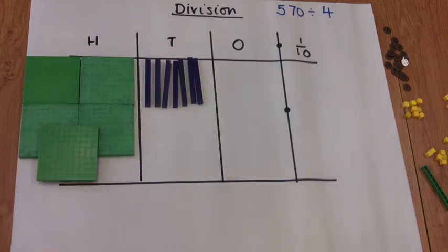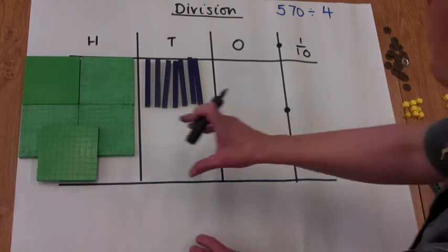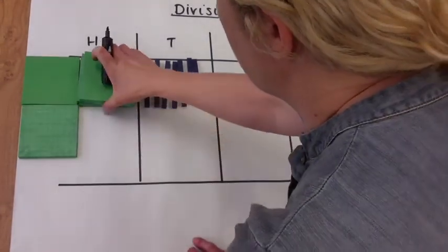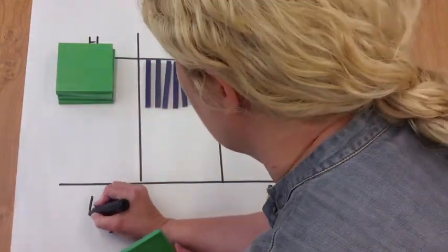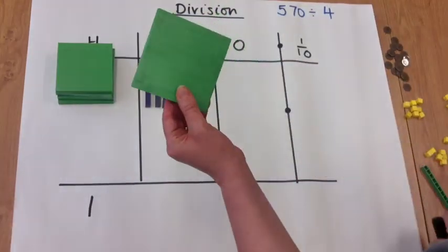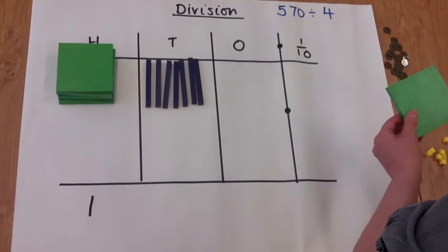So we're looking for groups of 4 in each column. Starting with the hundreds, we've got one group of 4. I'll write that in. And then we've got 100 left over.